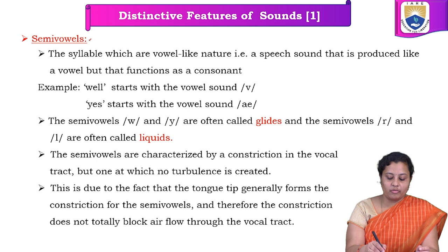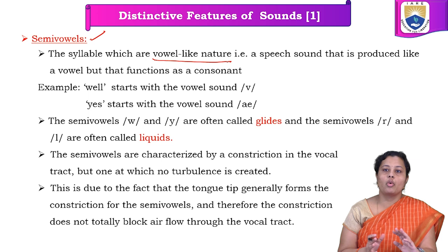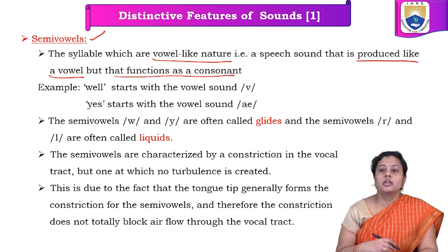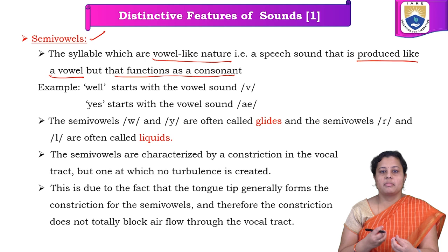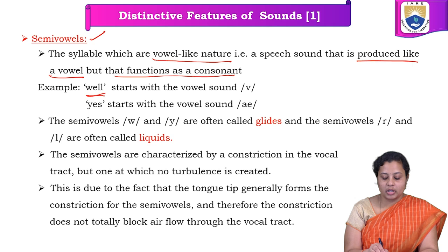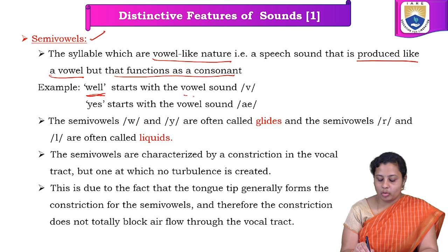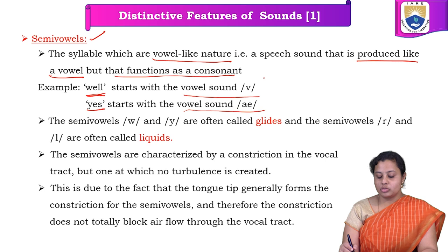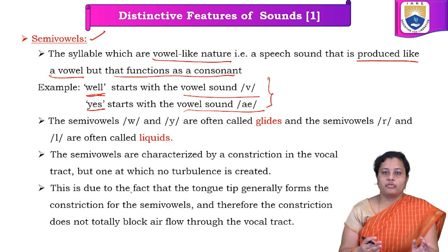The first type is semi-vowels. Semi-vowels have the nature of vowel sounds — they are produced like a vowel but function as consonants. They sound like a vowel sound but are actually consonants in the language. For example, when we pronounce the word 'well,' we have the sound 'va,' which is very similar to a vowel sound, whereas when we say 'yes,' that has the vowel sound 'ya.' These two are examples where semi-vowels are present.